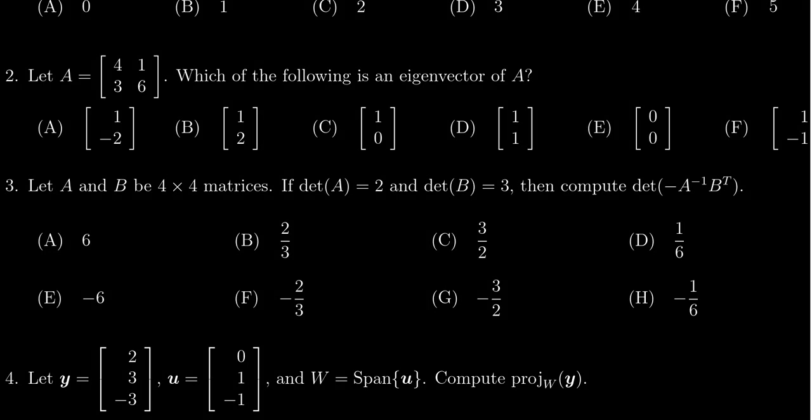In this video, we're going to answer question number two from practice exam number three for Math 2270. We're given a matrix A, which is two by two, consisting of the numbers 4, 1, 3, and 6. We're asked which of the following is an eigenvector of A.